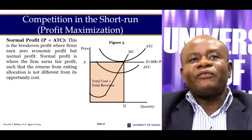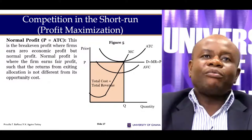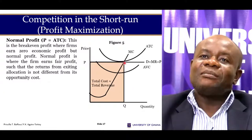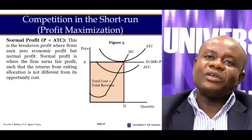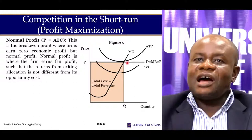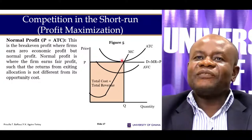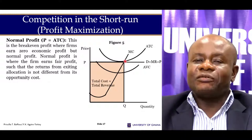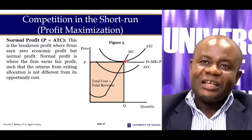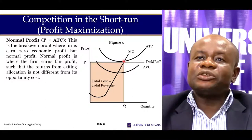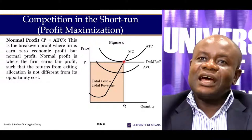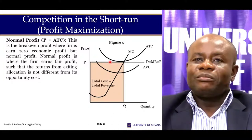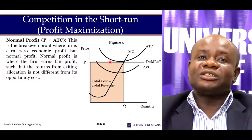The firm can also make normal profit or break even. This is where the price is equal to the cost per unit of producing the commodity. At the point where marginal cost equals marginal revenue, output is determined. The ATC at that output is also at that same point, so price equals cost per unit — meaning the firm breaks even and makes normal profit.